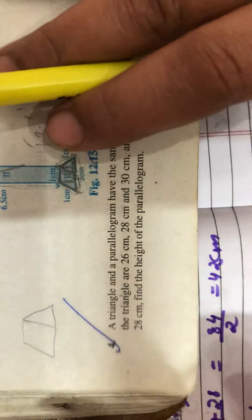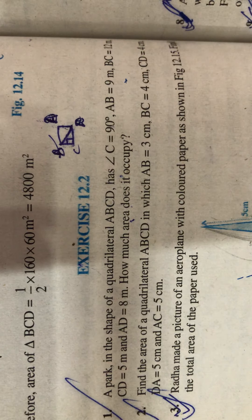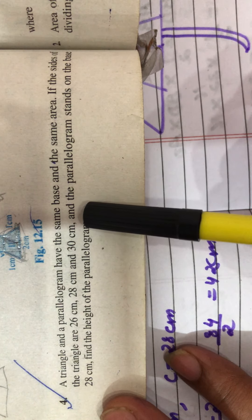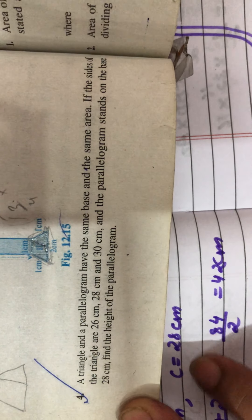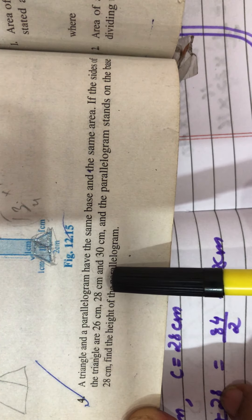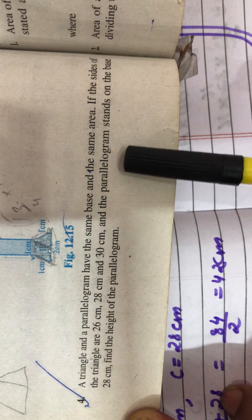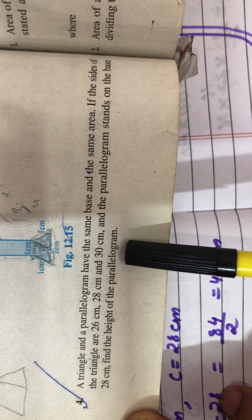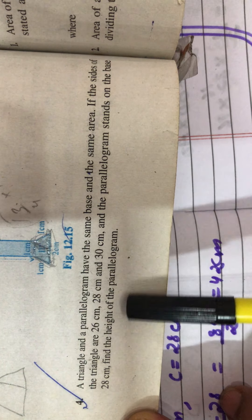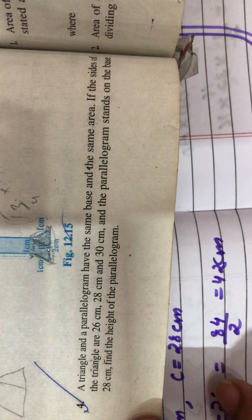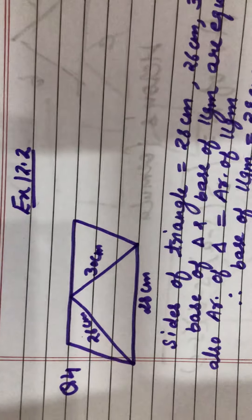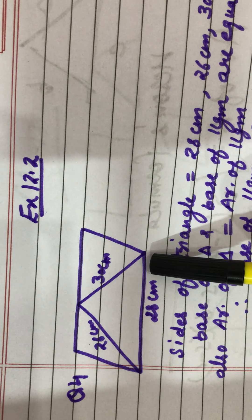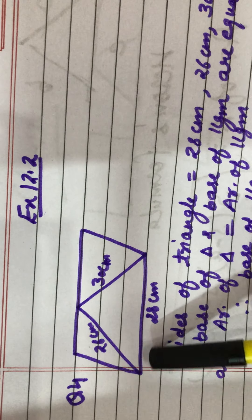We will do question number 4 of Exercise 12.2. Questions 1, 2, and 3 are deleted. Question 4: A triangle and a parallelogram have the same base and same area. The sides of the triangle are 26 cm, 28 cm, and 30 cm, and the parallelogram stands on the base 28 cm. We have to find the height of the parallelogram. You can see the figure — both share the same base of 28 cm.